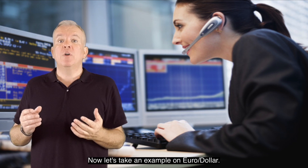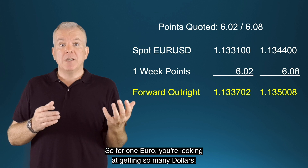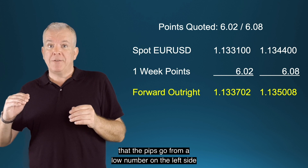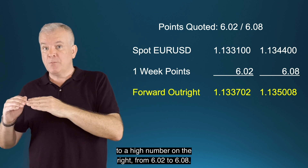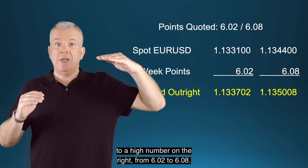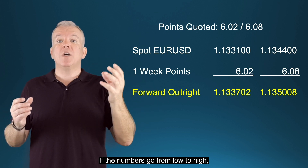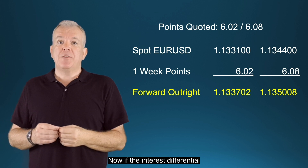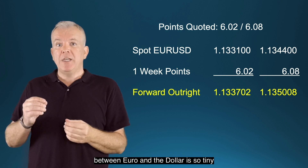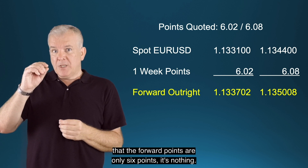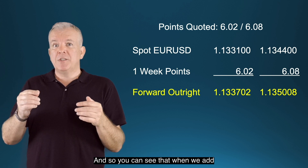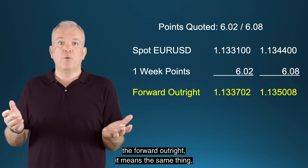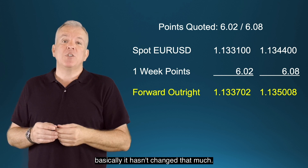Let's take an example on EURUSD — for one euro, you're looking at getting so many dollars. You can see here in this quote that the pips go from a low number on the left side to a high number on the right, from 6.02 to 6.08. If the numbers go from low to high, you add the pips onto the forward FX quote. The interest differential between EUR and USD is so tiny that the forward points of only six points is nothing. So when we add the forward points onto the spot rate, the forward FX rate — also called the forward outright — basically hasn't changed that much.